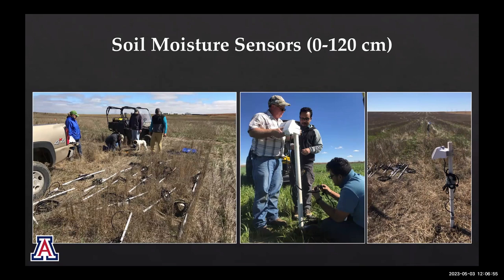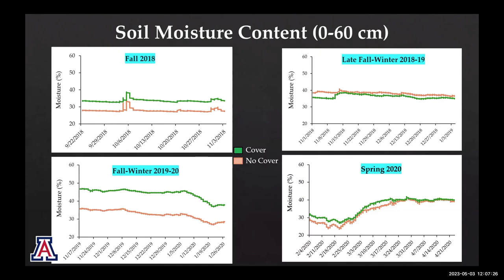A healthy soil will have an almost uniform distribution of moisture up to a certain level — kind of from just below the surface to the root zone. Below that there will be saturation in some conditions, like in the Midwest. We checked this using cover crop versus no cover crop. The green is the cover crop system. We had a cover plot and a no-cover plot side by side. Cover crops actually kept more moisture because there are residues that control evaporation.